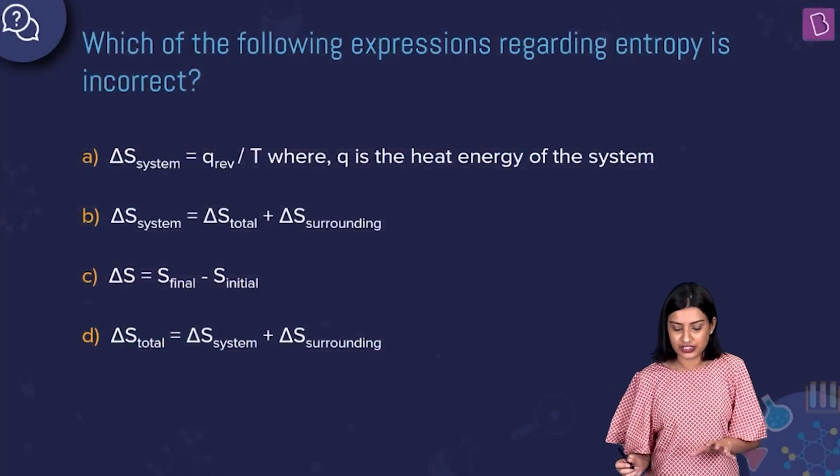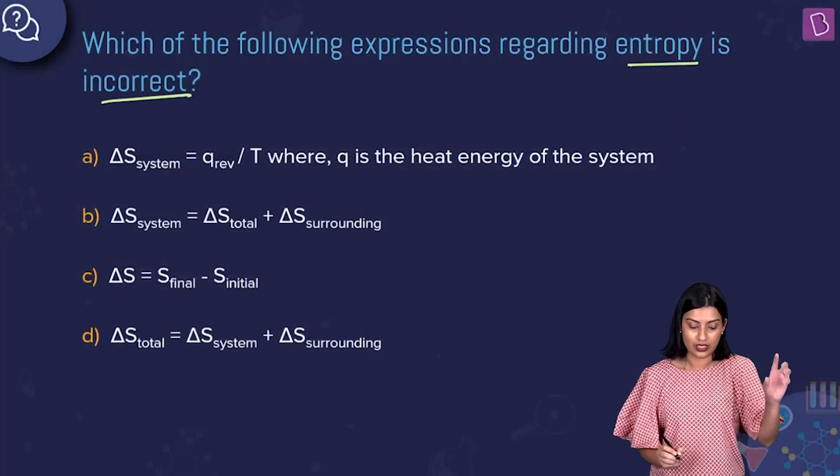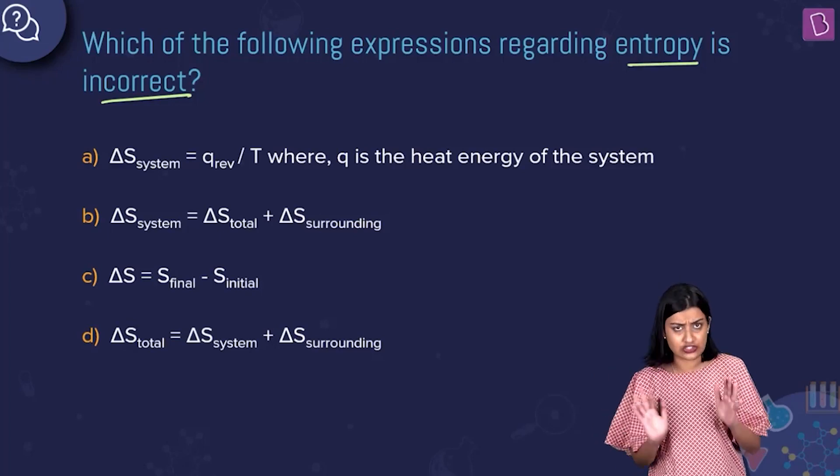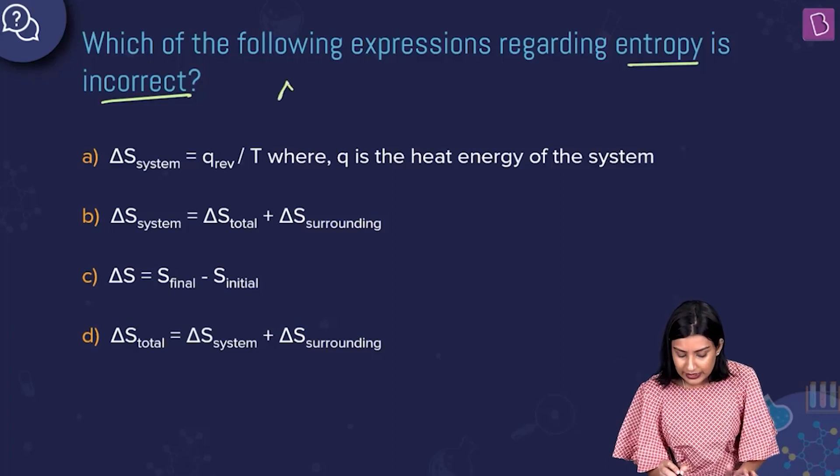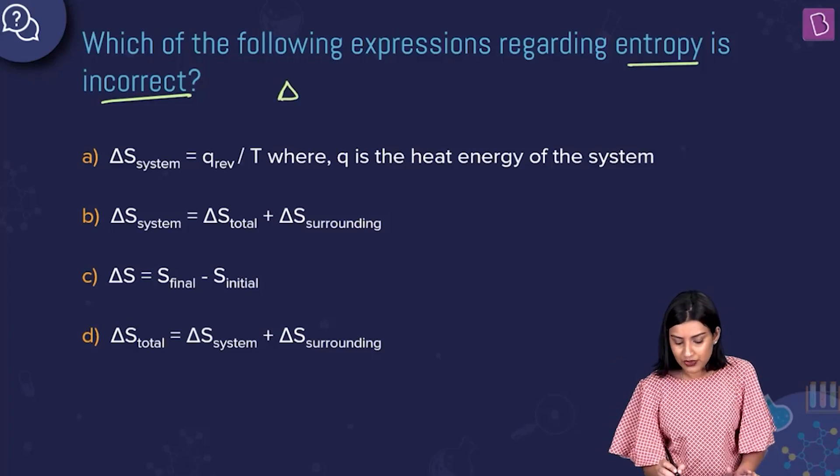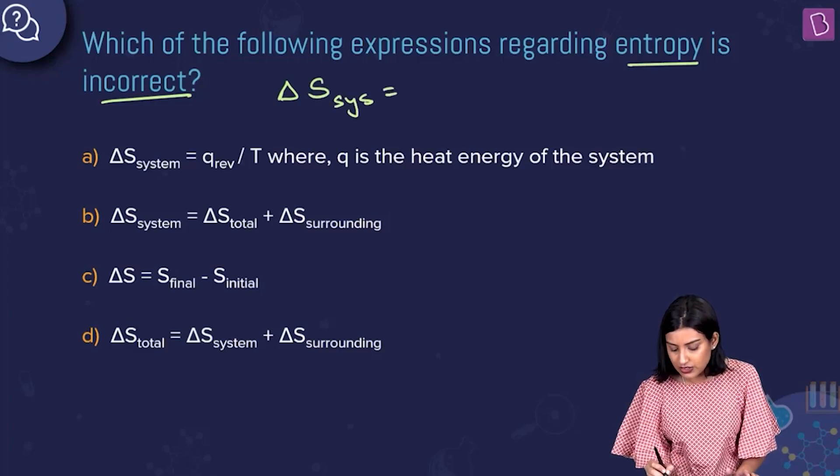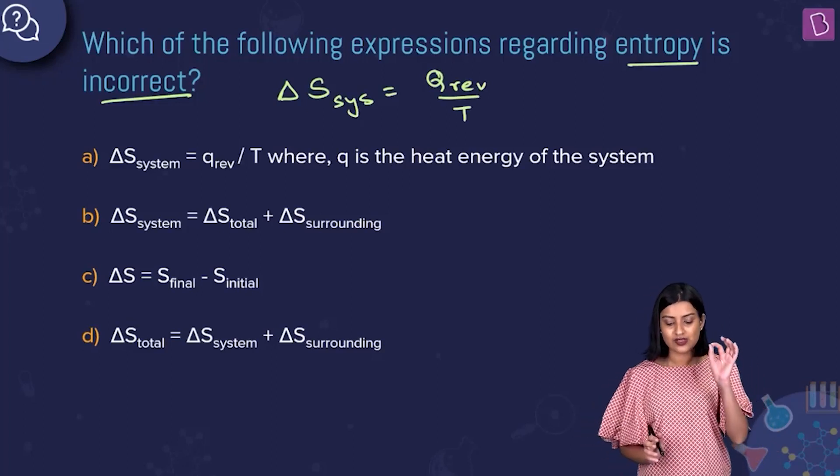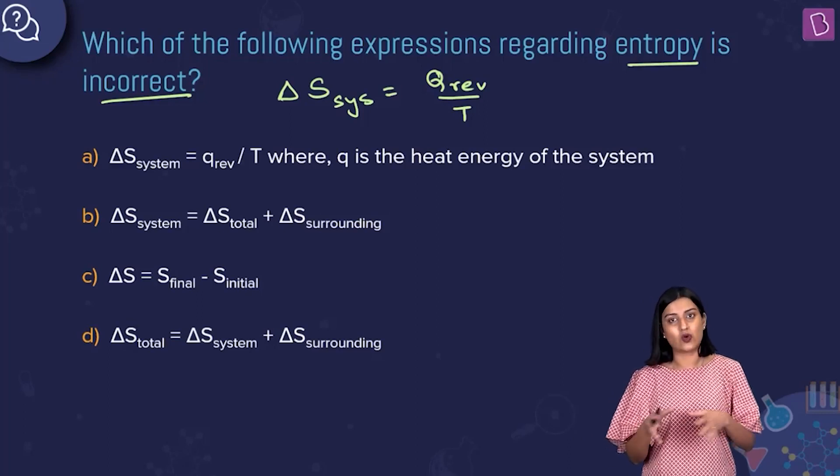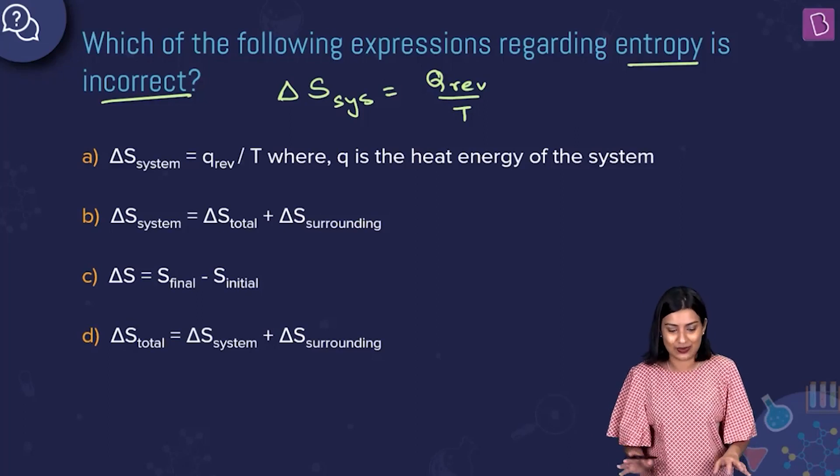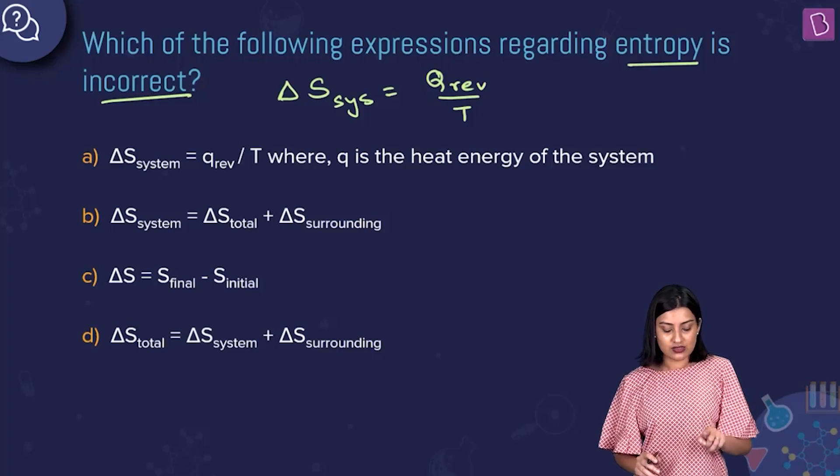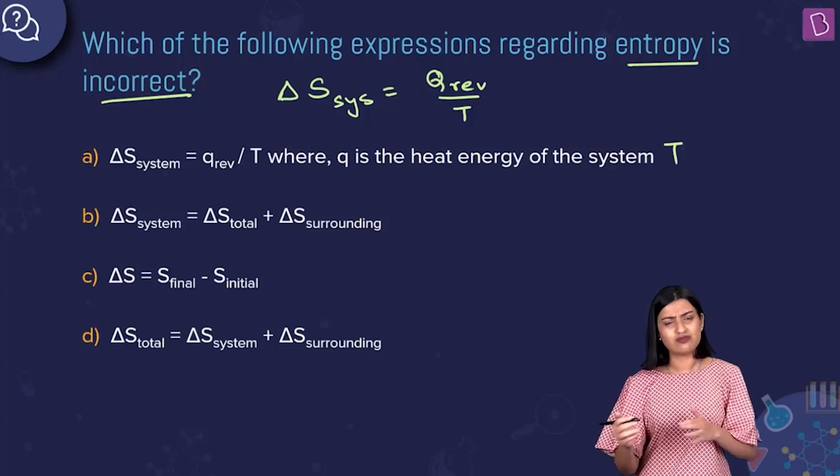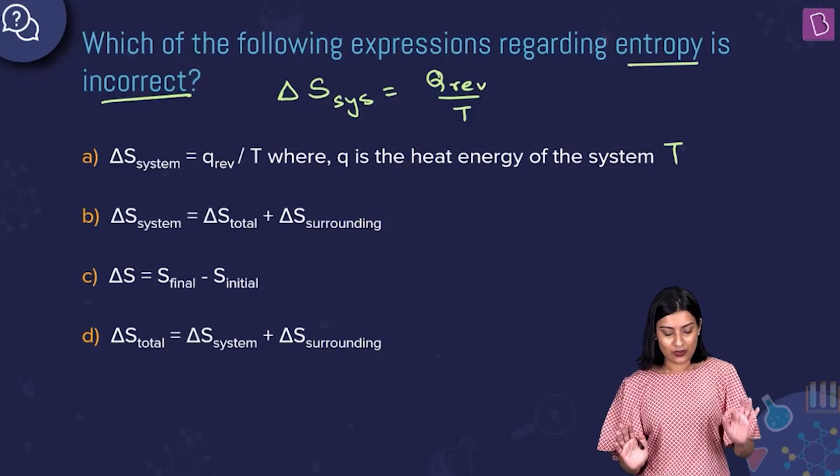So here they're saying which of the following expressions regarding entropy is correct? When we write down the mathematical expression for entropy change in a given system, what do we write? We write delta S. Delta S is how we represent change in entropy. Delta S of the system is nothing but your Q reversible upon T. This is what we write. This is the one thing we know for sure. Option A is saying delta S of system is equal to Q reversible by T, where Q is the heat energy of the system. Definitely true. The statement is true.